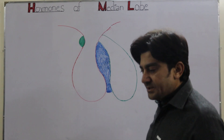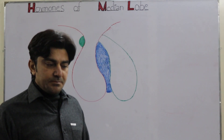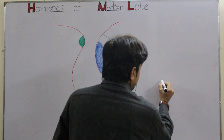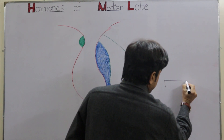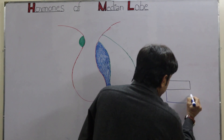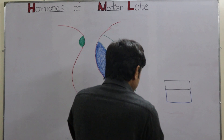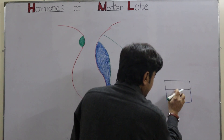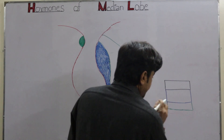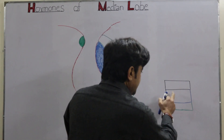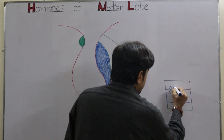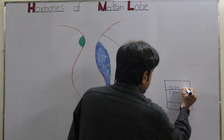Before discussing the hormones of the intermediate lobe, let me discuss one important type of cell present in our skin as well as in our hair follicles. These cells are called melanocytes. Our skin consists of three main layers: epidermis, dermis, and hypodermis — which consists of adipose tissue, the fatty layer. In between the epidermis and dermis, these special melanocyte cells are present, and they have many processes extending from them.